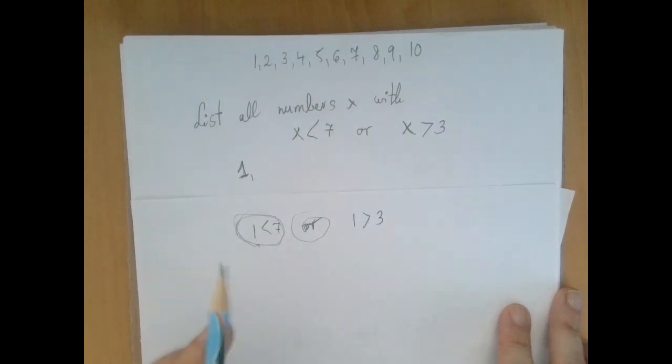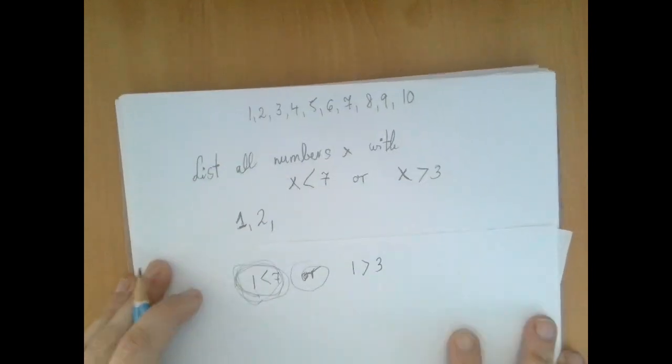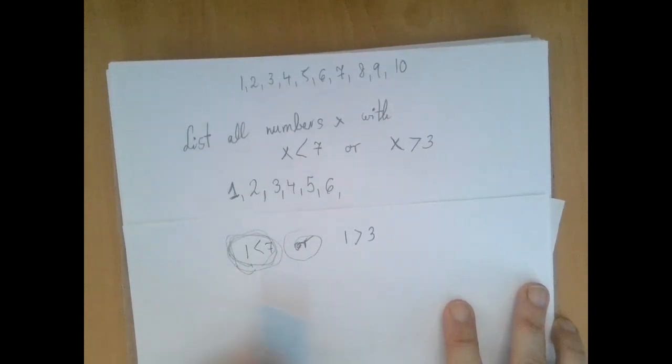So automatically, these 6 numbers, 1 through 6, this is true for them. So therefore, they are on the list. That speeds us up a little bit, right? Because this is an or statement. If the first one is true, we don't even have to worry about the second one.